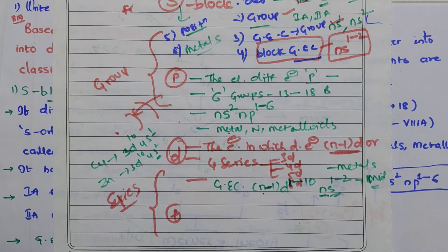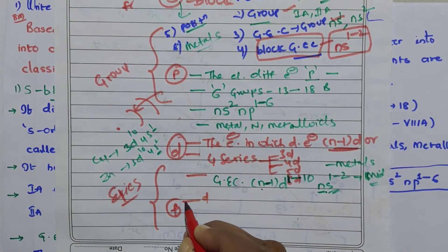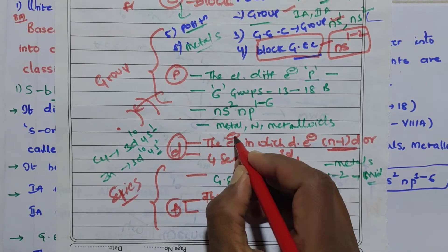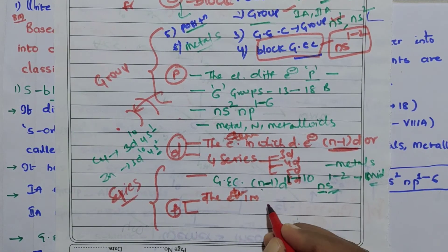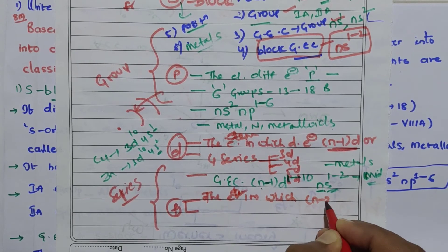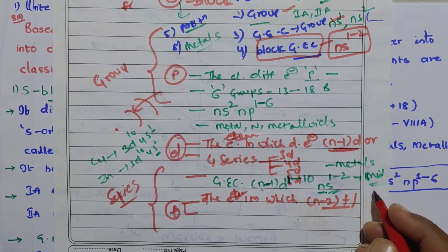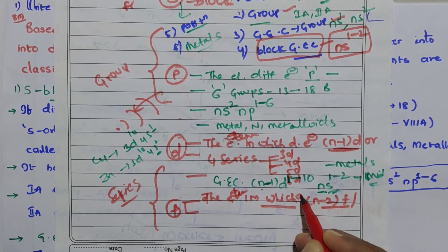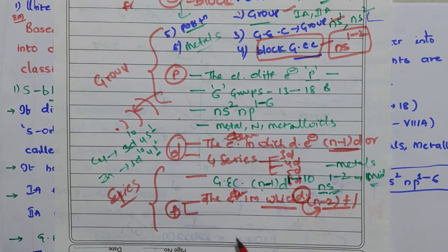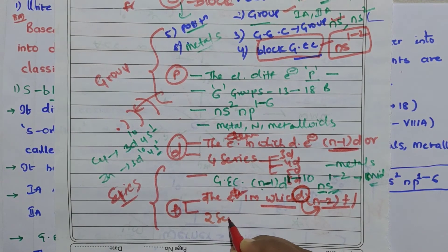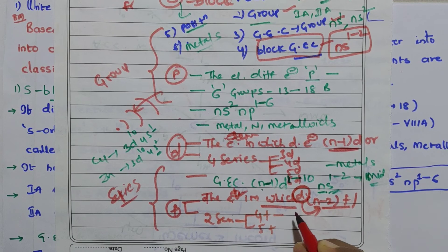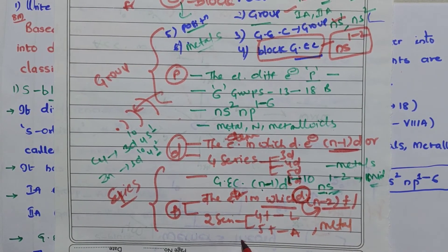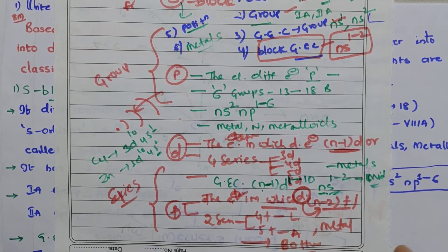F block is next. The definition: the elements in which the differentiating electron enters into the (n-2)f sub-shell are called f block elements. There are two series: the 4f series called lanthanides, and the 5f series called actinides. These are metals placed at the bottom of the periodic table.